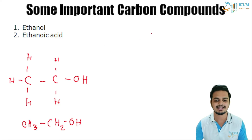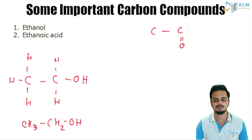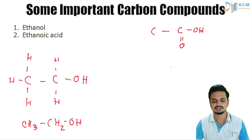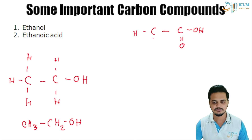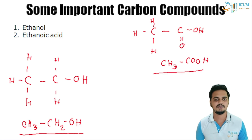Now let's write the structure of ethanoic acid: C single bond C. It has '-oic acid' as a suffix, so we know it is a carboxylic acid. The structure of carboxylic acid is drawn accordingly, and filling the valency gives us CH3-COOH. This is ethanoic acid.